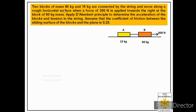Two blocks of mass 60 kilogram and 15 kilogram are connected by a string and move along a rough horizontal surface. When a force of 300 newtons is applied towards the right at the block of 60 kilogram mass, apply D'Alembert's principle to determine the acceleration of the blocks and tension in the string. Assume that the coefficient of friction between the sliding surface of the blocks and the plane is 0.25.